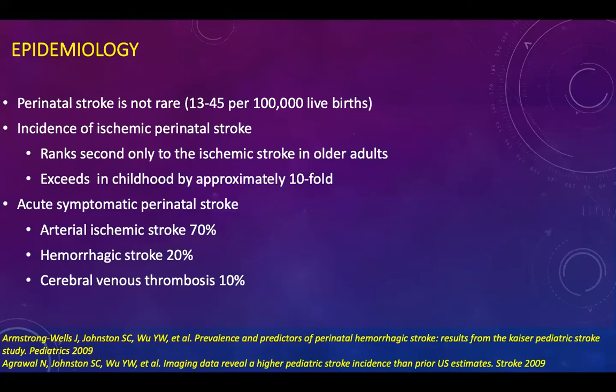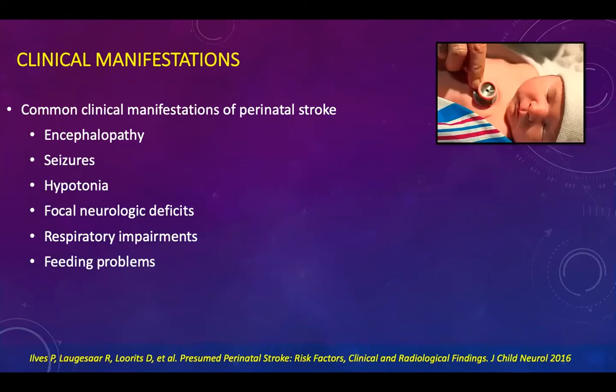Epidemiology varies widely depending on case definition, but perinatal stroke has been reported from 13 to 45 per 100,000 live births. It ranks second only to ischemic stroke in older adults and exceeds childhood stroke by approximately tenfold. In terms of percentage, arterial ischemic stroke is maximum at 70%, with hemorrhagic stroke second at about 20%.